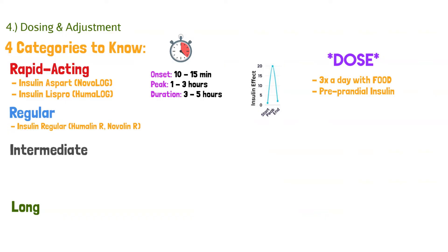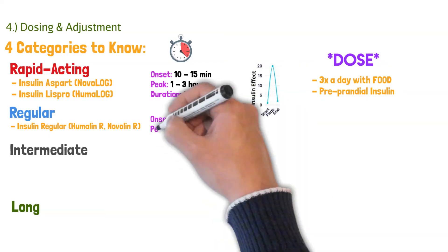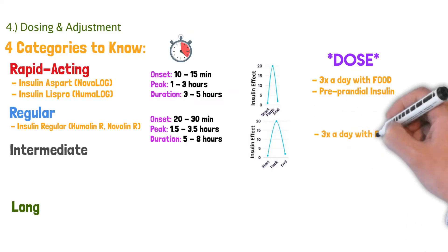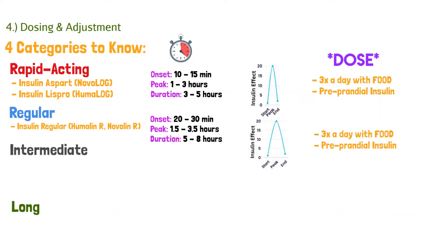Our next option is regular insulin, the closest to natural insulin you can get. It's called insulin regular, with two brands: Humulin R and Novolin R — the R stands for regular. The onset is a little slower at 20 to 30 minutes, the peak is one and a half to three and a half hours, and the duration is five to eight hours. Again, you can take this up to three times a day with food. It's a preprandial insulin, so you take it before you eat to cover your meal.